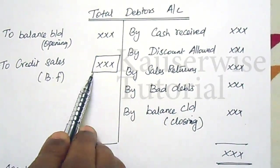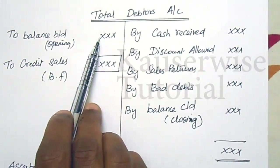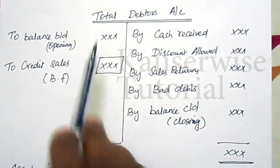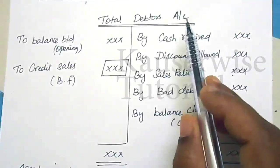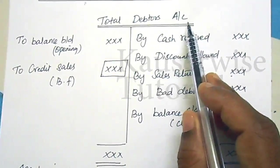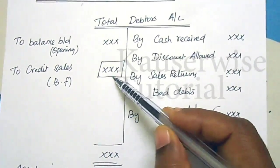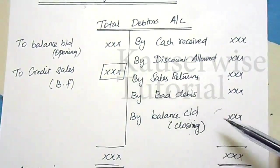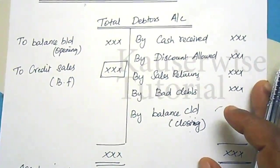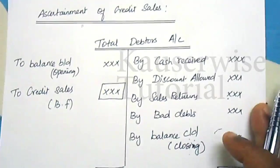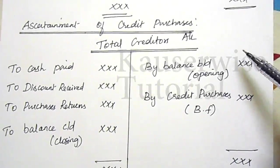After entering all these items, the balancing figure will be credit sales. In some cases, credit sales may be given in the problem itself and the opening balance may also be given; then the balancing figure will be the closing debtors. The debtors account is essential to find out either credit sales, opening balance, or closing balance.